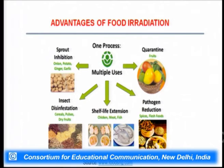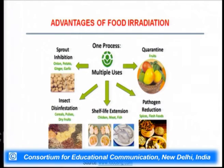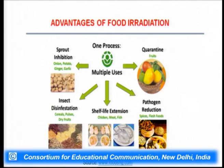The advantages of food irradiation are that it is a single process with multiple uses: it can inhibit sprouting in onion, potato, ginger, and garlic; serve quarantine purposes for export/import of fruits; achieve insect disinfestation from cereals, pulses, and dry fruits; extend shelf life of chicken, meat, and fish; and reduce pathogenic microorganisms from spices and flesh foods.